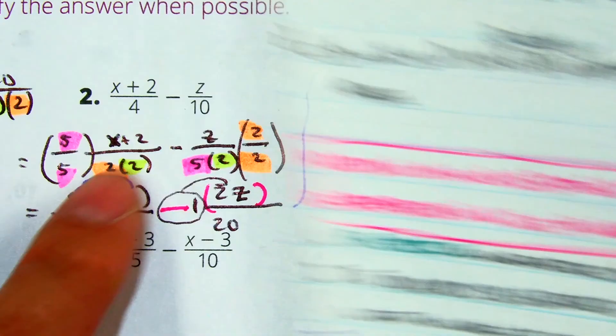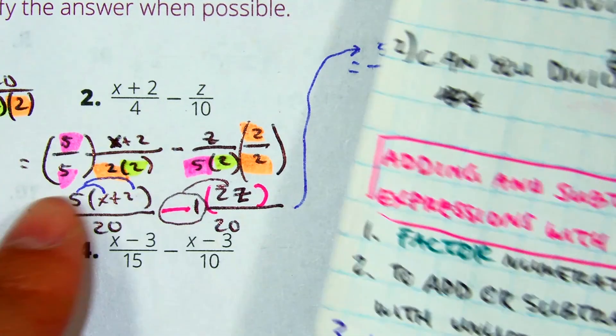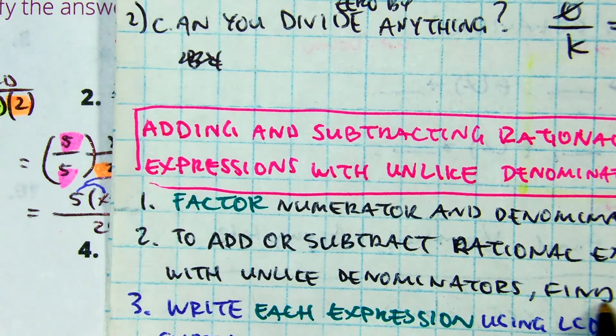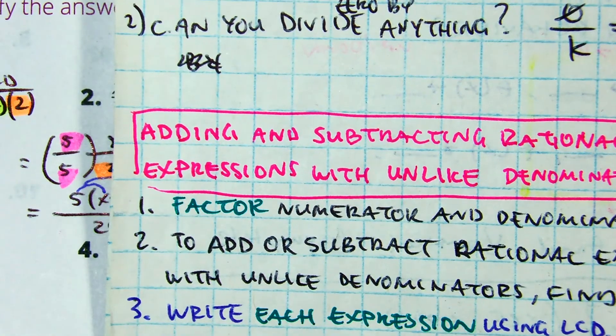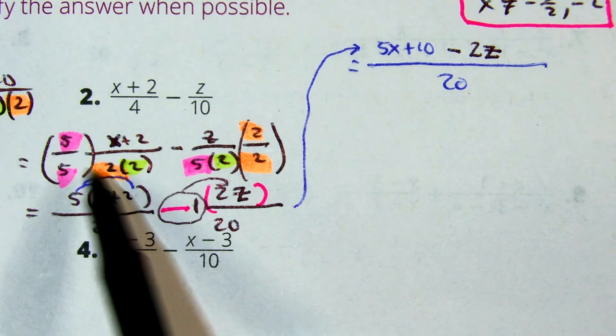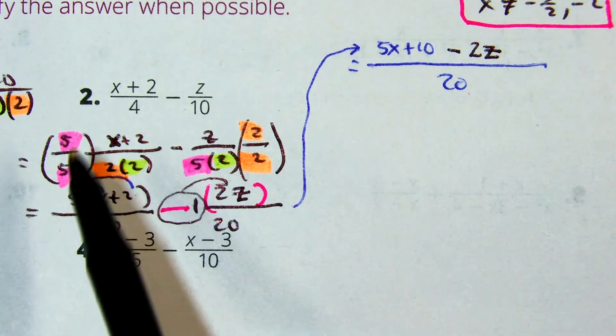We factored it. I factored the denominator to help me find the LCD. We found the LCD, and we wrote each expression with the LCD. That's the matching colors. If this side has a pink, this side has a pink. This side has orange, orange, yellow, yellow.